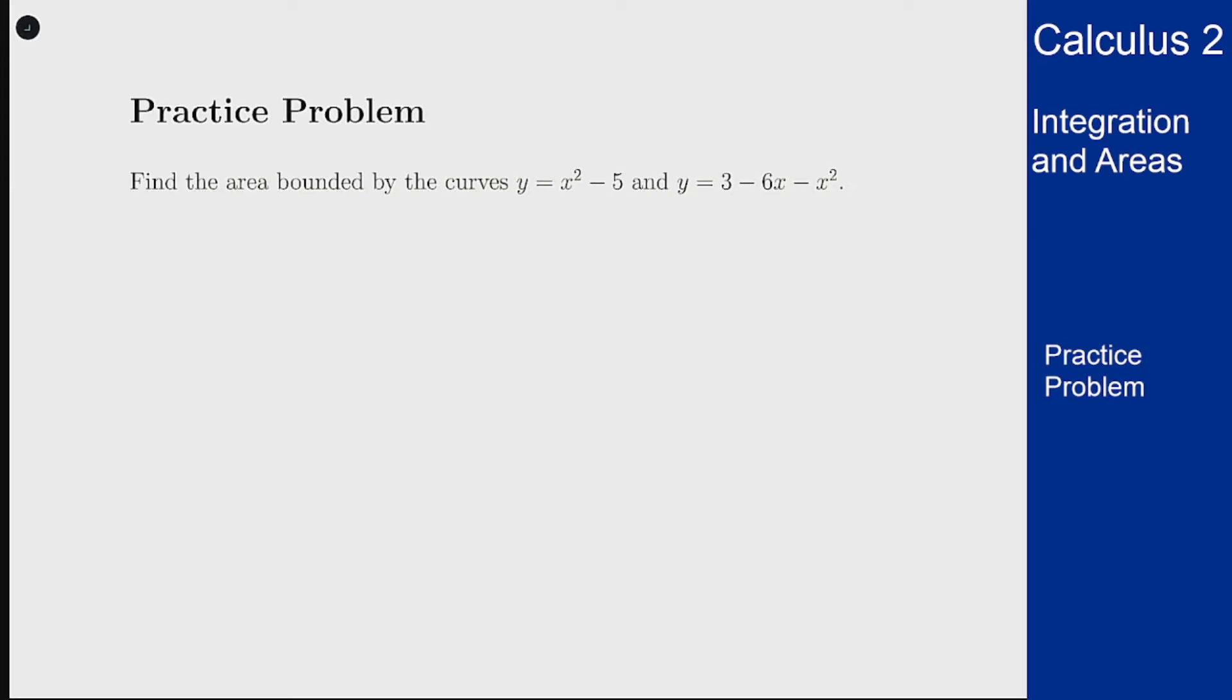In this example we want to find the area bounded by the curves y equals x squared minus 5 and y equals 3 minus 6x minus x squared.